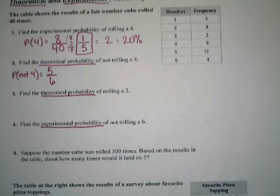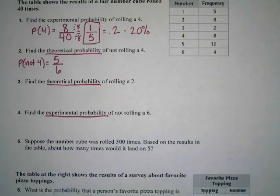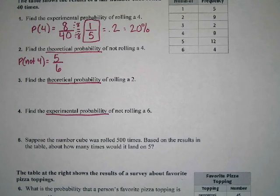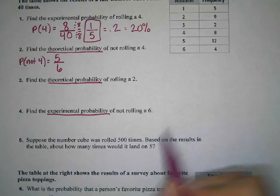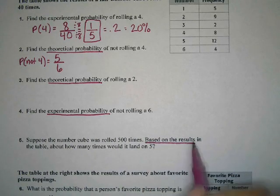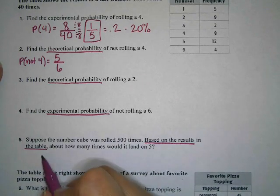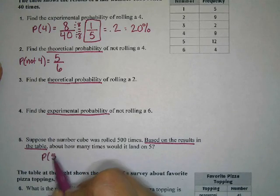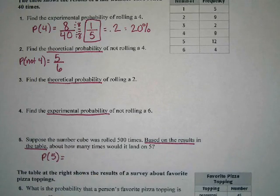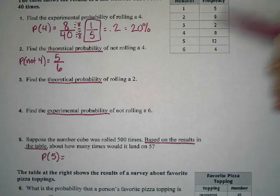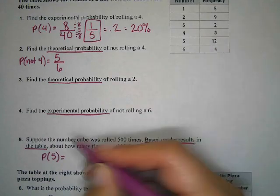Let's look at number 5 because it's a little different. Suppose the number cube was rolled 500 times based on the results in the table. Here's my clue: based on the results in the table, I'm going to use my experimental probability. How many times would it land on a 5? We need to know what the probability of rolling a 5 is from the table. We rolled a 5 twelve times.